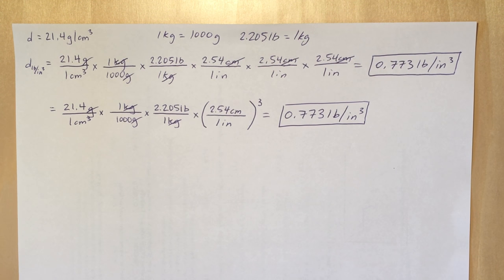Okay, let's go ahead and do the second problem you picked. When we look at this problem, it's asking us to convert the density of platinum from grams per cubic centimeter to pounds per cubic inch.